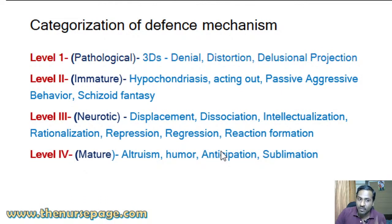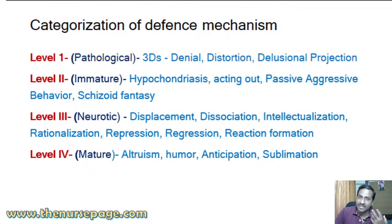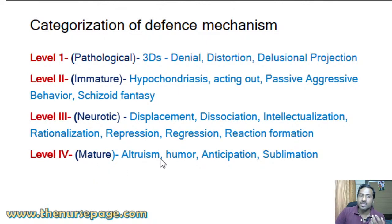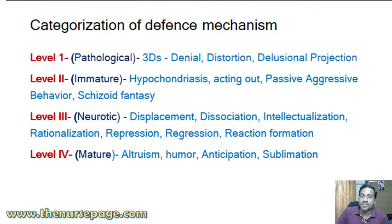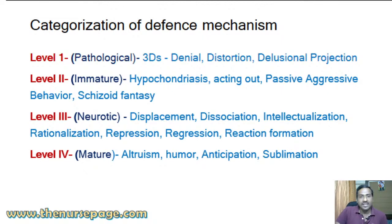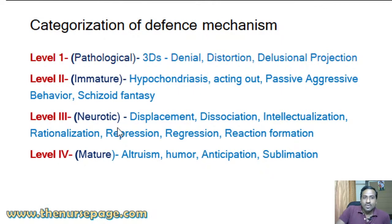Level four includes mature defense mechanisms — healthy defense mechanisms that everyone can follow. Examples are altruism, humor, anticipation, and sublimation. This completes the categorization of defense mechanisms by George Iman Weyland. In competitive exams, you can expect at least a minimum of two questions from defense mechanisms.